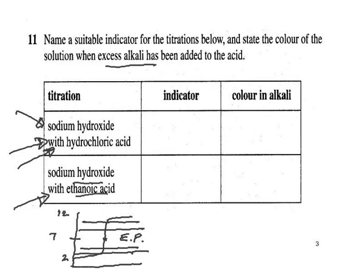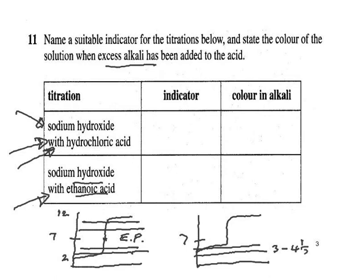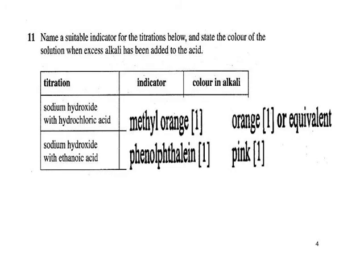For a weak acid with a strong base, the graph starts higher — around pH 5 — and finishes above pH 12. Methyl orange changes between pH 3 and 4.5, which doesn't fall within the vertical section. Phenolphthalein, changing between pH 8.5 and 10, does fall within the vertical section, so phenolphthalein is the suitable indicator here — colourless in acid, turning pink at the end point.